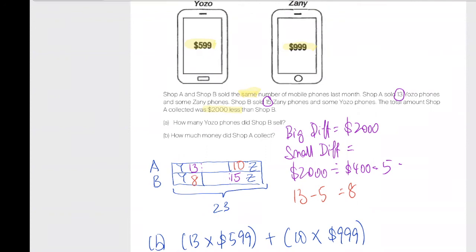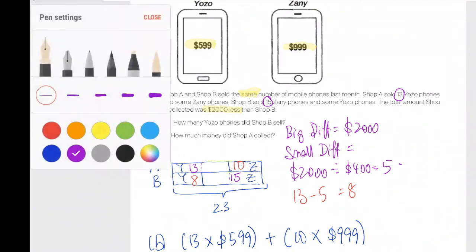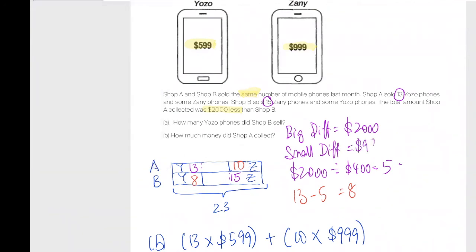I'll make it clear here, the small difference here is 999 minus 599, which goes to 400. And then therefore, I can find out that actually it is five more Yozo phones. So if they sold the same number of phones, they would sell five more Yozo and Shop B will have sold five more Zeny phones.